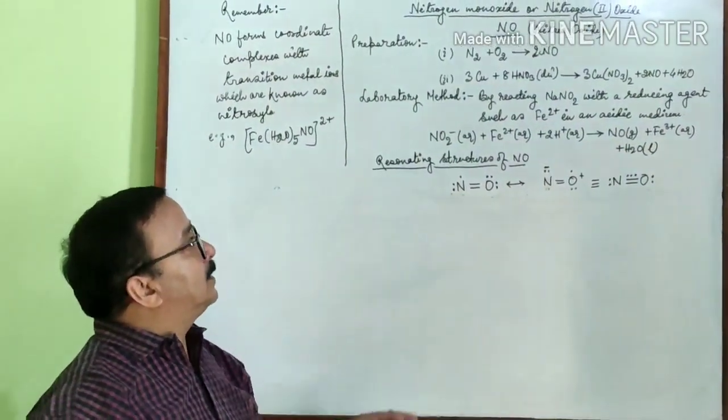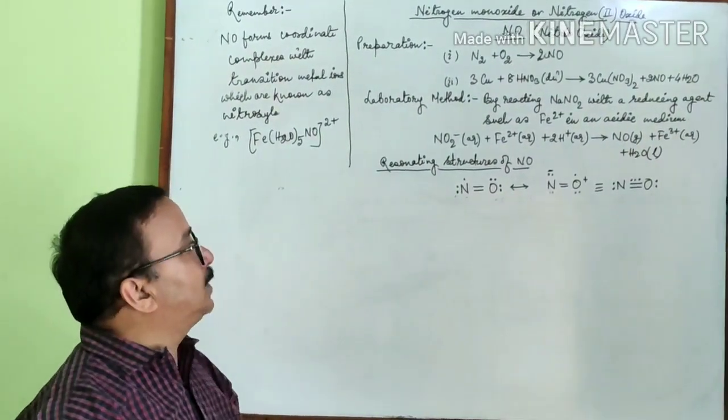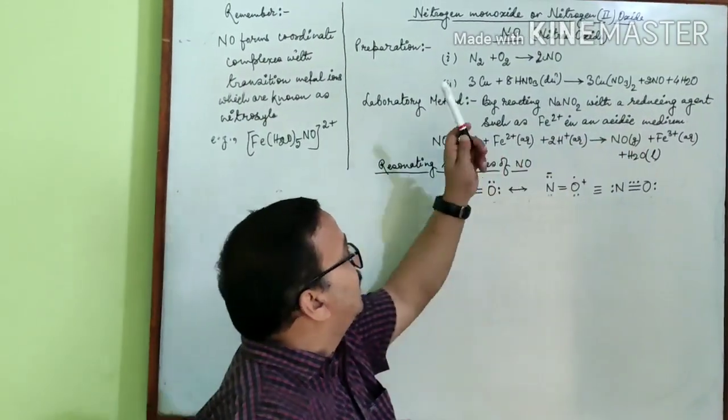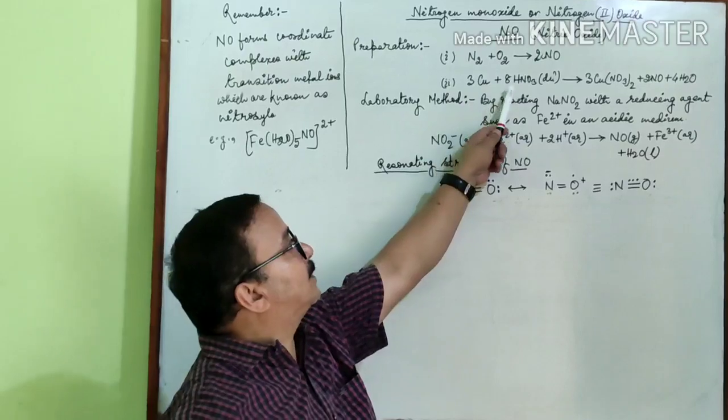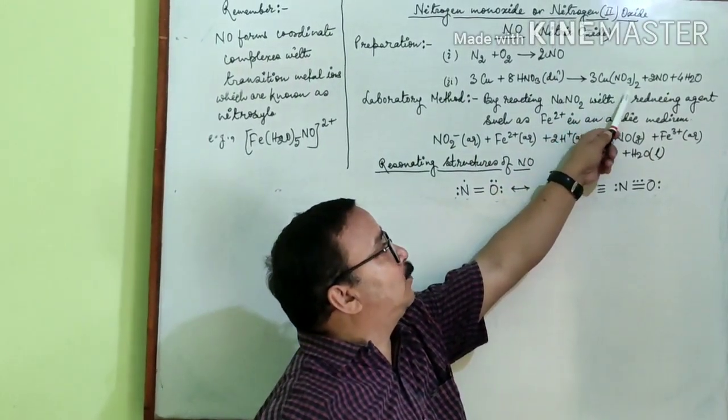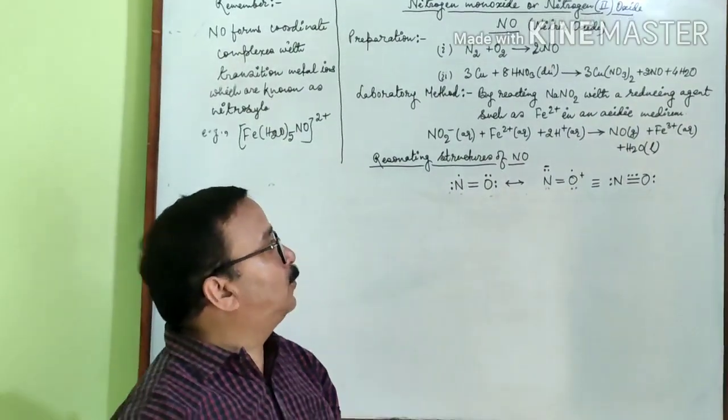Second method is when copper metal is treated with dilute HNO3, then nitric oxide is formed. The reaction is 3Cu + 8HNO3 gives 3Cu(NO3)2 + 2NO + 4H2O.